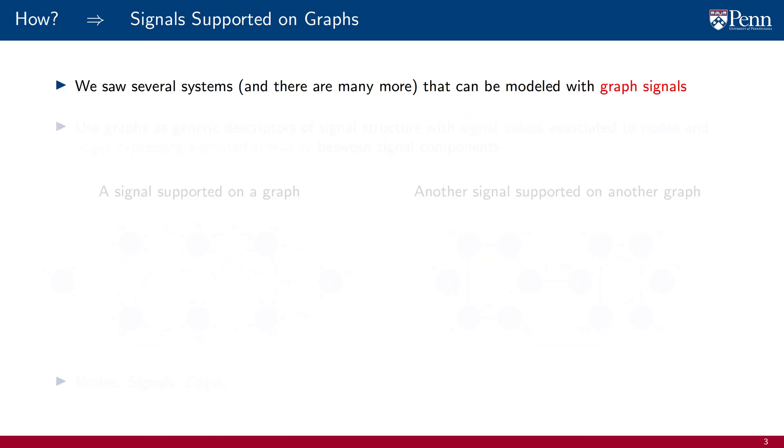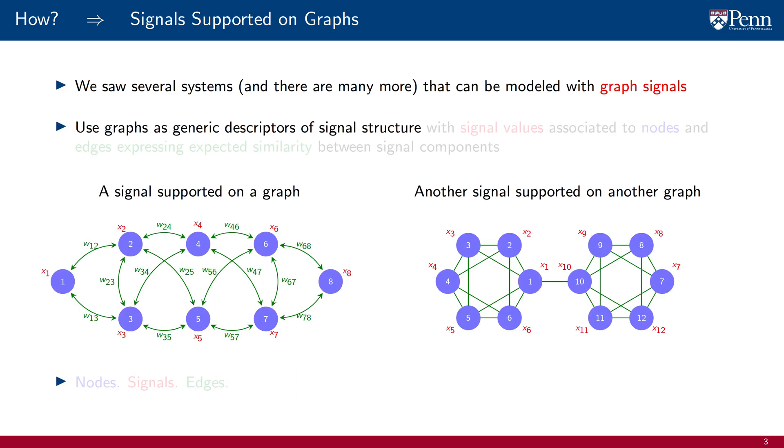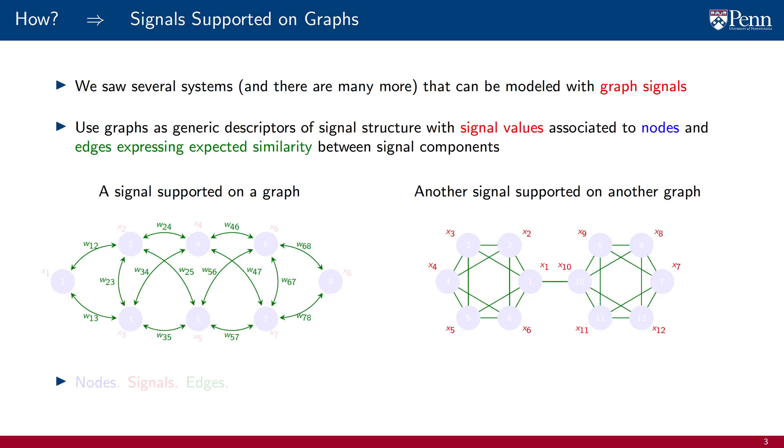Regarding the question of how, the first component of our answer is to introduce the notion of a graph signal, which we have used to model several systems of practical importance. In a graph signal model, we use a graph as a generic descriptor of signal structure, with signal values associated to nodes and edges expressing similarity between components of the signal. These are the three elements of a graph signal model: nodes that support signal components and edges that describe the respective proximity.